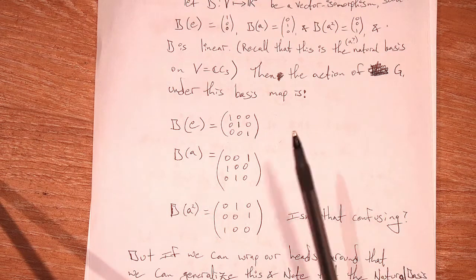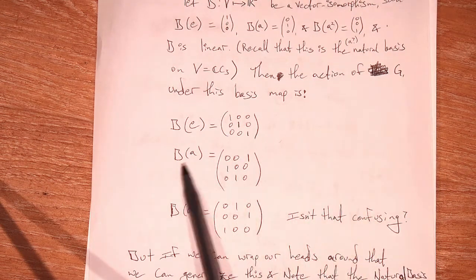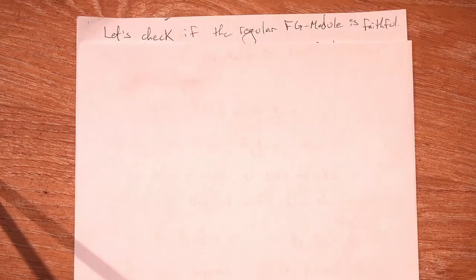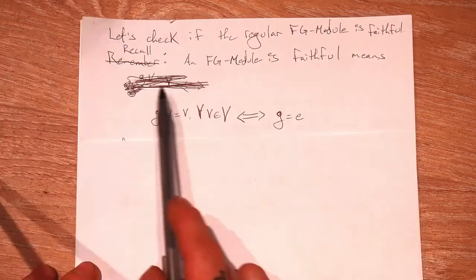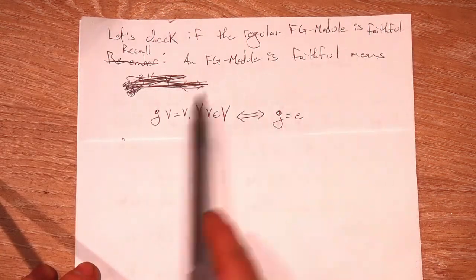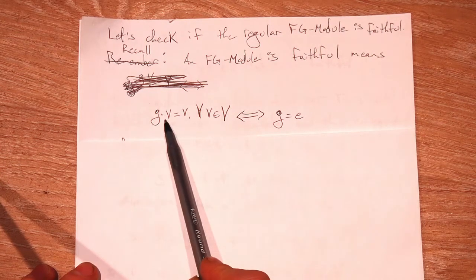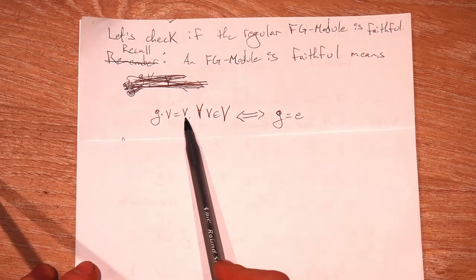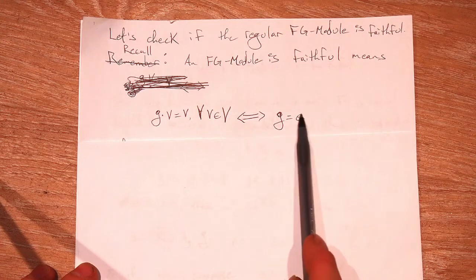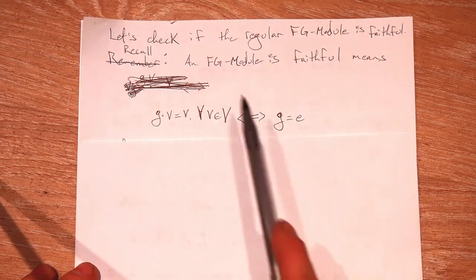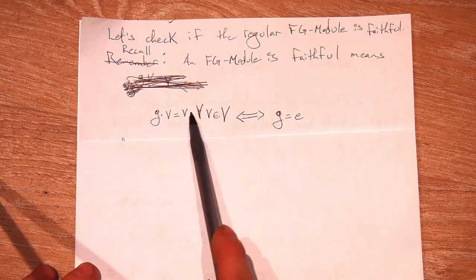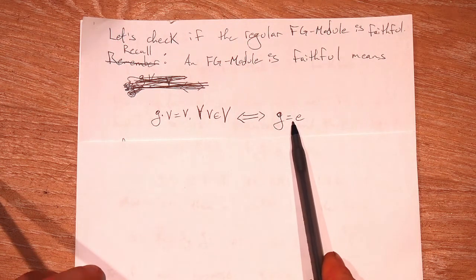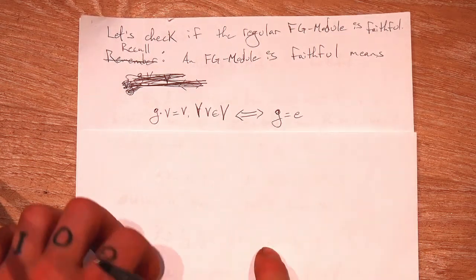That's how you're going to find the regular representation of a group over a field once you've constructed the regular FG module. FG modules and representations have different properties that we can check for. One of them is faithful. So let's see if the regular FG module and its related representation is actually faithful. Recall that an FG module is faithful means that if there is a group element that acts on a vector and gives you back that vector for all vectors, that is true if and only if the only group element that does that is the identity.